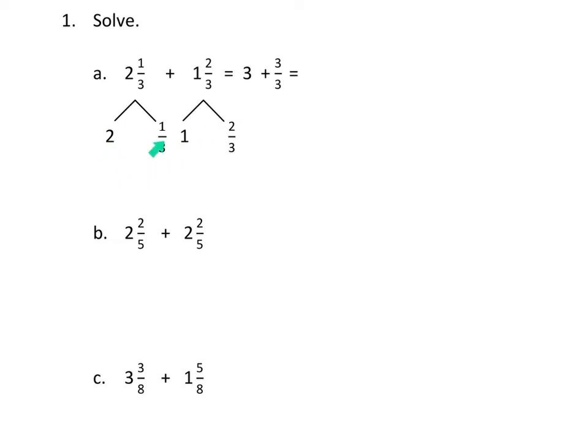And the 1/3 plus the 2/3 come together to make 3/3, which is another whole. 3/3 all filled in is one whole. And when you have 3 wholes plus another whole, all together, you have 4 as your final answer.